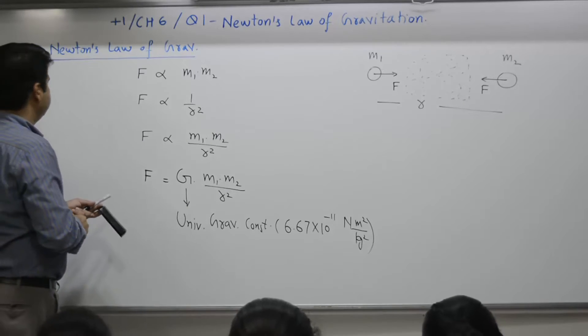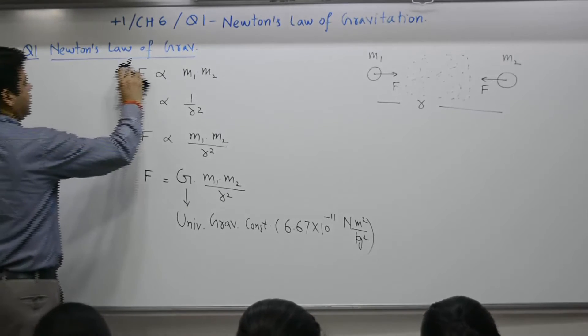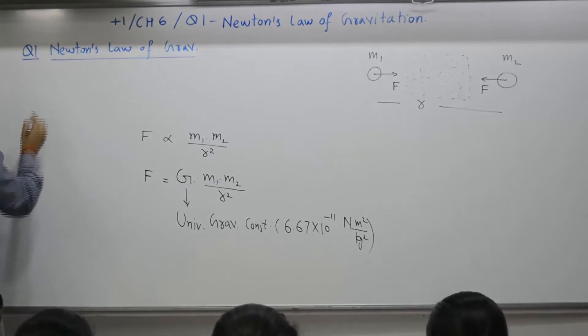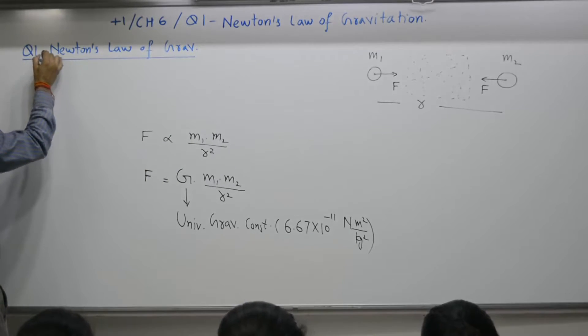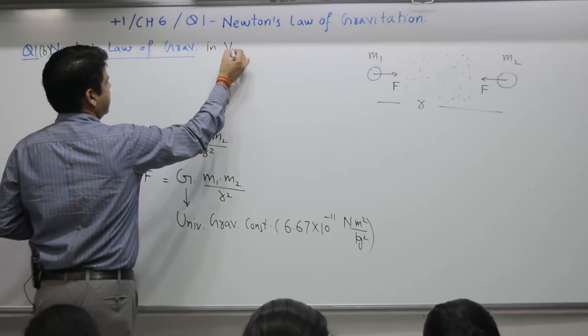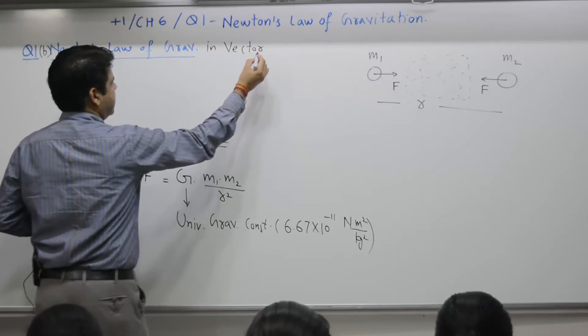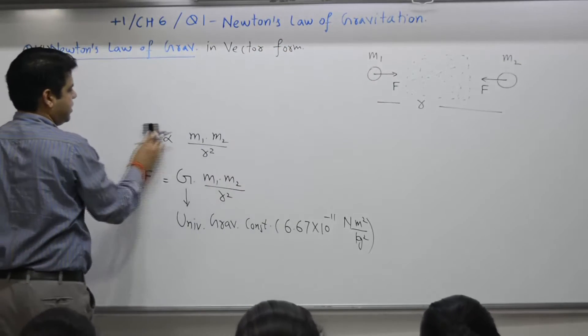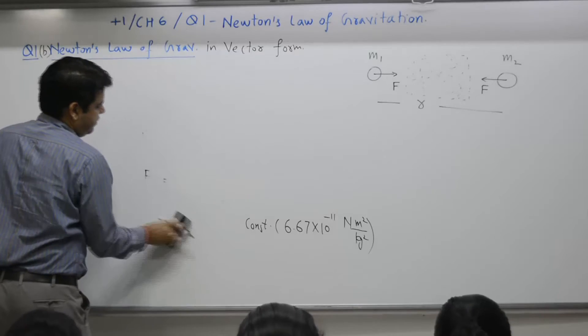This first part is a scalar form. B part of the same is Newton's law of gravitation direction in vector form. Means what? You have to give direction.